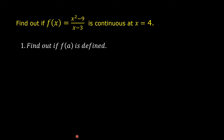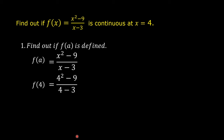First step: find out if f(a) is defined. f(x) = (x² - 9) / (x - 3), and a = 4. So f(4) = (4² - 9) / (4 - 3) = 7. Therefore, f(a) is defined.